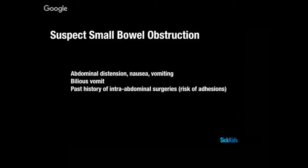When do we suspect small bowel obstruction? We think about it when patients present with abdominal distension, nausea, and vomiting. That vomit may also be bilious, suggesting something lower down in the GI tract. Often there can be a history of intra-abdominal surgery, leading to a risk of adhesions where the bowel can get trapped, twisted, and kinked.